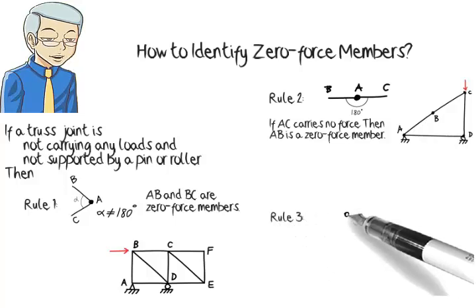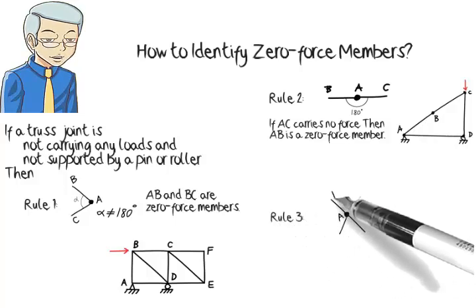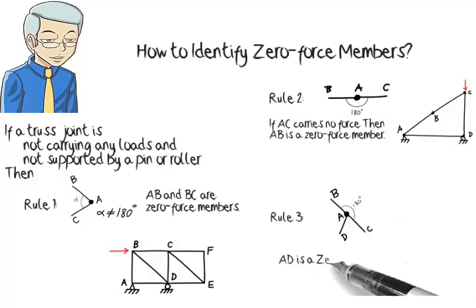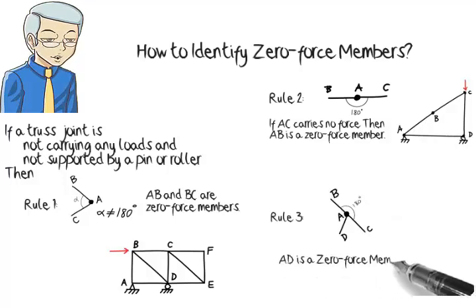Rule 3. If a joint connects three members only, and two of the members are collinear, then the third one is a zero-force member.